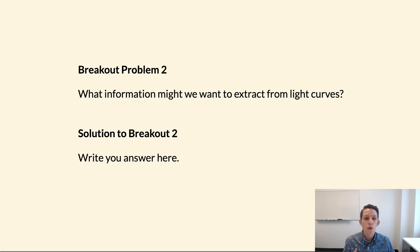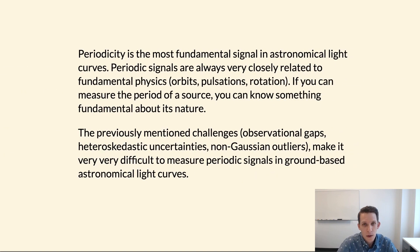So there are many things that might be useful, information that might be useful to extract from a light curve. Just things like how bright is a source getting, how faint is a source getting? When do changes in brightness occur, what is the rate of those changes? But I contend that the most useful thing that we can pull out of a light curve is a measurement of periodicity.